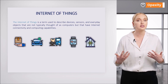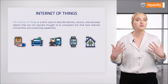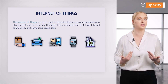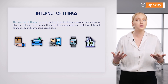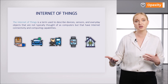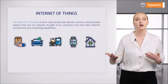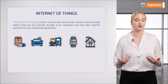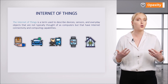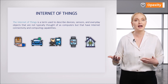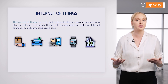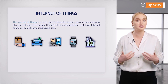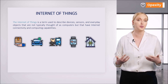A device in the Internet of Things could be a person with a heart monitor implant, livestock with a biochip transporter, a car with built-in sensors to warn the driver of low tire pressure, or any other natural or artificial object that can be assigned an IP address and transmit data over a network.